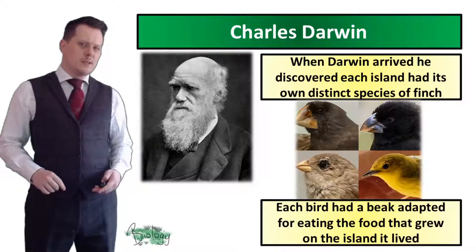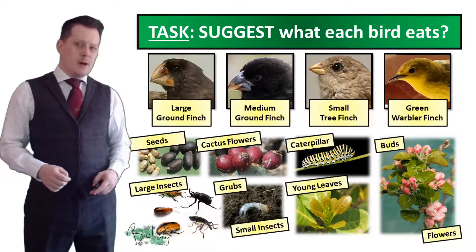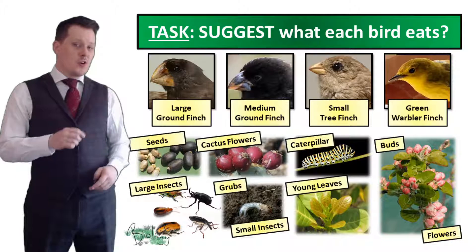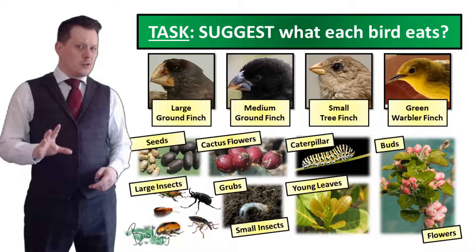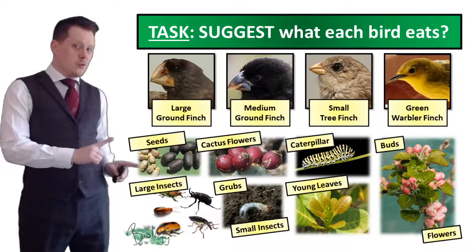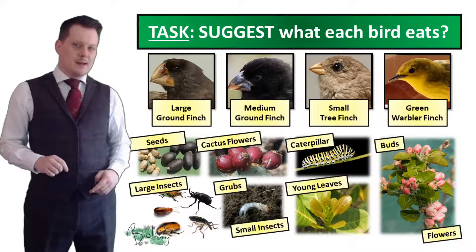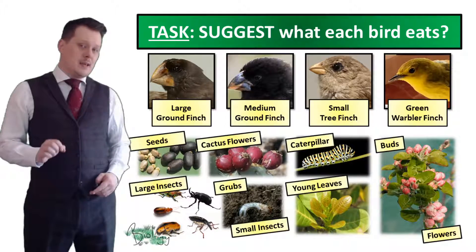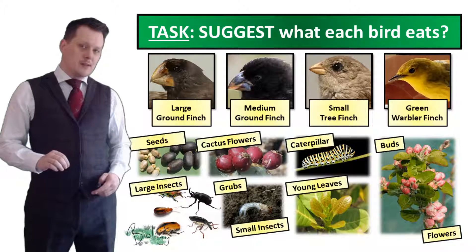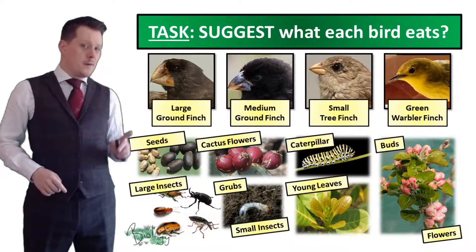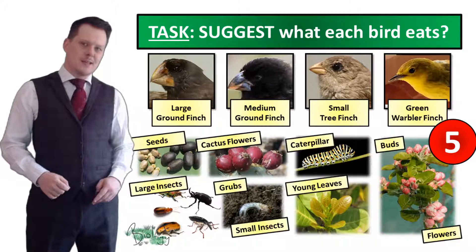Before we move on, I'd like you to suggest what each of these four birds eats: the large ground finch, the medium ground finch, the small tree finch, and the green warbler finch. Look at their beaks and all the different food sources below, and try to match up the food to the correct bird. Each bird eats more than one food source and none eats more than four. Pause if you need more time.